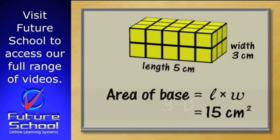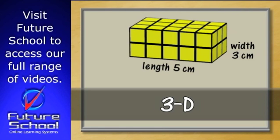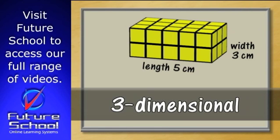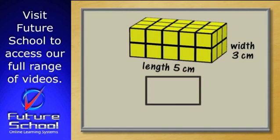Have you heard people talking about 3D? The D stands for dimensional. A flat shape like a rectangle has two dimensions: length and width. But a solid like this rectangular prism is 3D. It has a third dimension, its height.